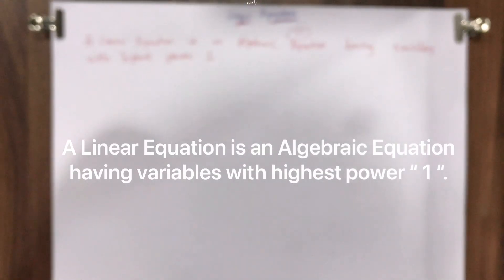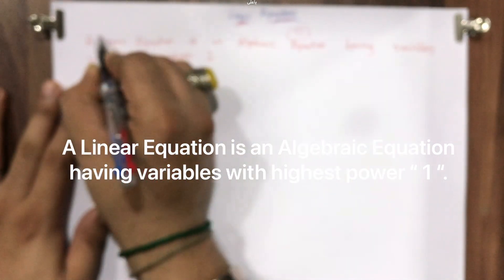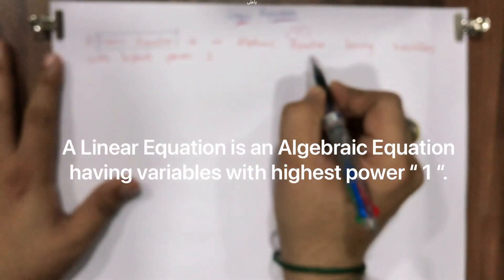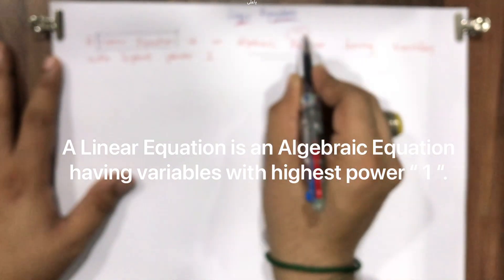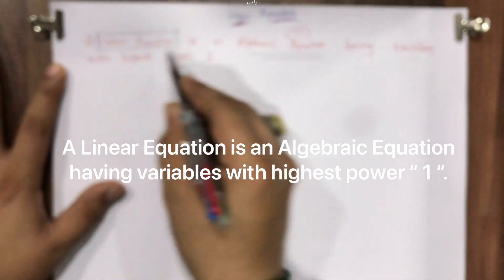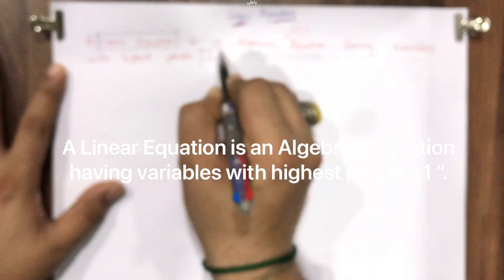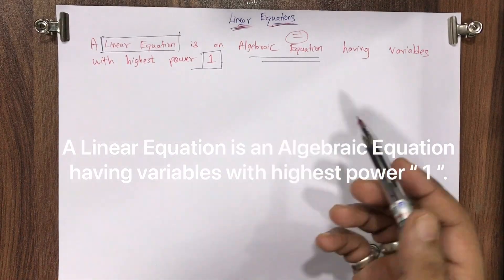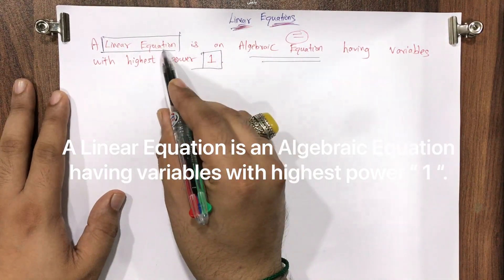Let's understand each and everything from this definition. A linear equation is an algebraic equation — as I told you, any expression in maths which has an equal to sign is called an equation. The speciality of the word 'linear' is that a linear equation has variables with the highest power as one.